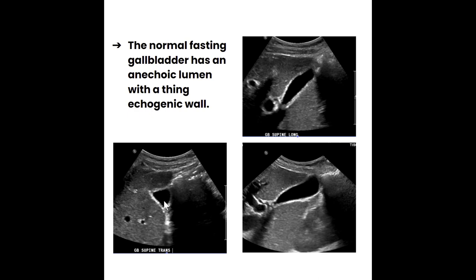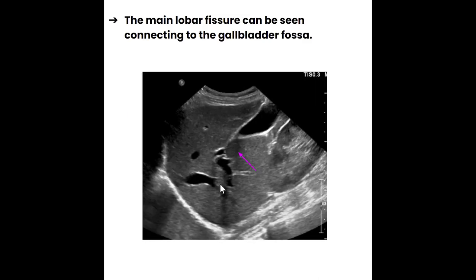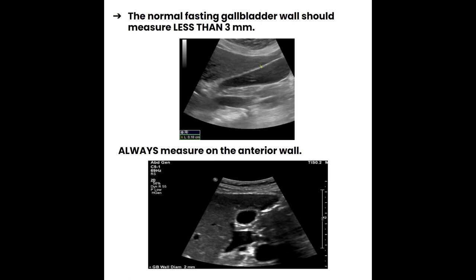In the transverse view, the gallbladder takes on more of a triangular or circular shape, with a nice anechoic center and bright echogenic walls. The main lobar fissure connects to the gallbladder fossa. If the patient had their gallbladder removed, you can identify where it used to sit by finding the main lobar fissure. Ultrasound is an excellent way to measure gallbladder wall thickness and is one of the gold standards for diagnosing cholecystitis.